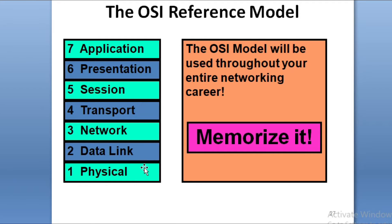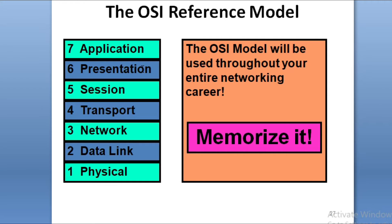To remember the OSI layers, use the mnemonic: Please Do Not Take Sales Person Advice — where P=Physical, D=Data Link, N=Network, T=Transport, S=Session, P=Presentation, A=Application.